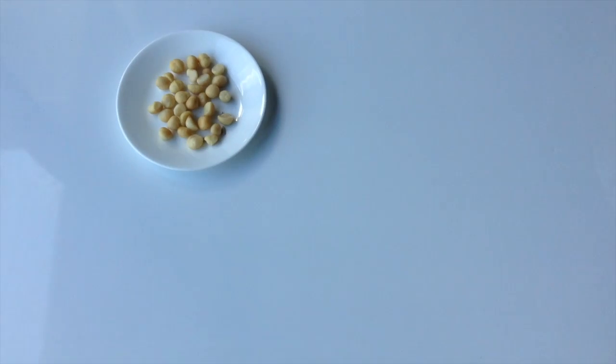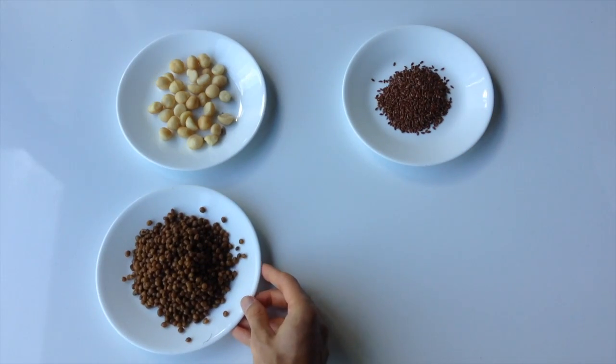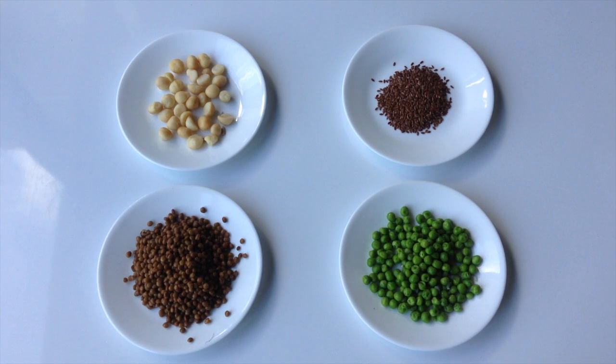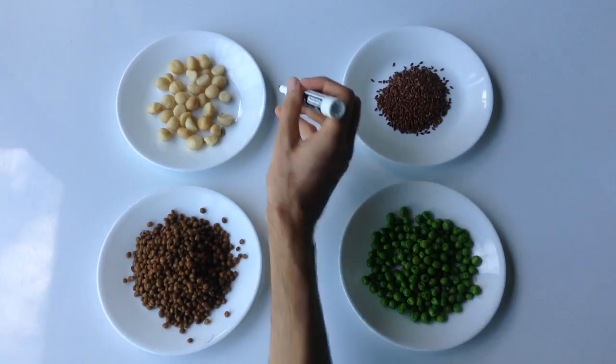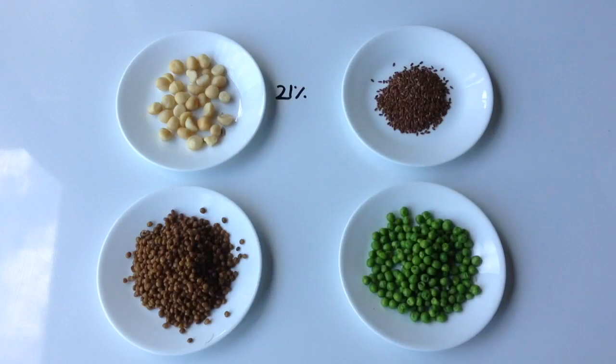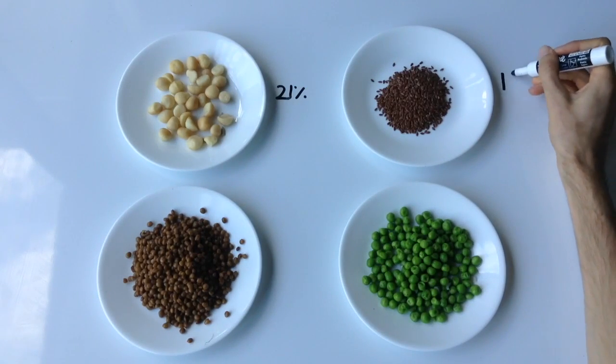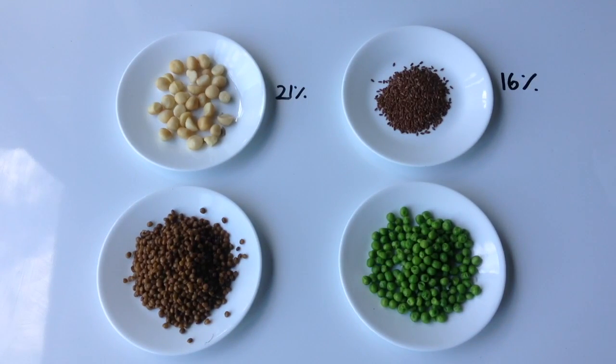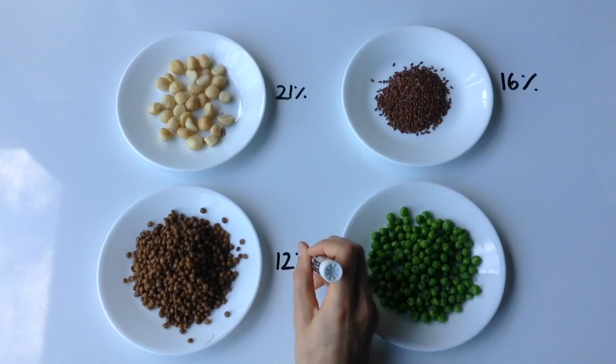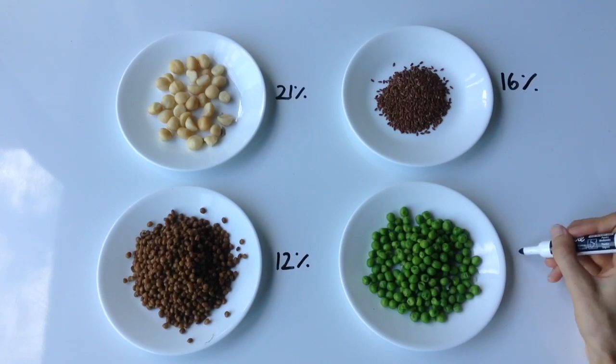Some other sources include macadamia nuts, flax seeds, lentils, and green peas. Macadamia nuts are one of the highest nut sources on the list with a handful having 21%. One tablespoon of flax seeds has 16%. Half a cup of lentils has 12%, and half a cup of green peas has 11%.